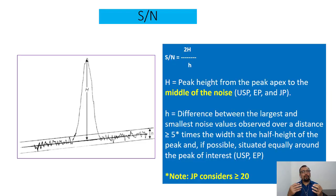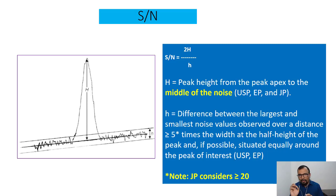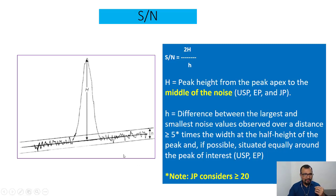If you go back and look at the signal to noise ratio calculation formulas given by USP, EP, or JP, you will find there are similarities except one point. What is S/N? It is two times capital H divided by small h. Capital H is the peak height from the peak apex to the middle of the baseline — 'middle of the baseline' is a very important statement. This is given by all three pharmacopoeias.